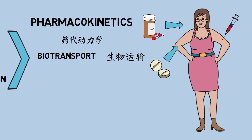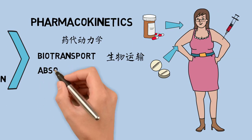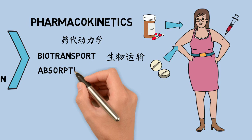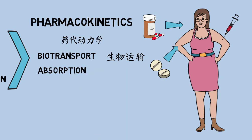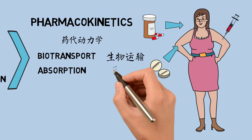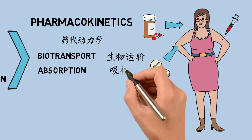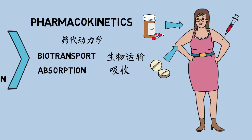Absorption: the process of a substance entering the blood circulation. It depends on the route the drug enters the organism and its bioavailability, which is the rate and amount of drug that is absorbed from a given dosage form and reaches the systemic circulation.